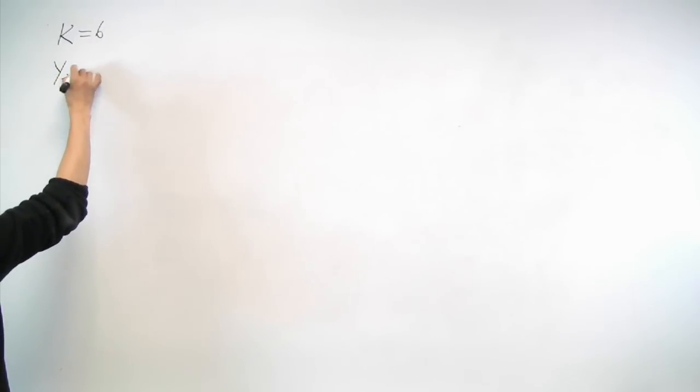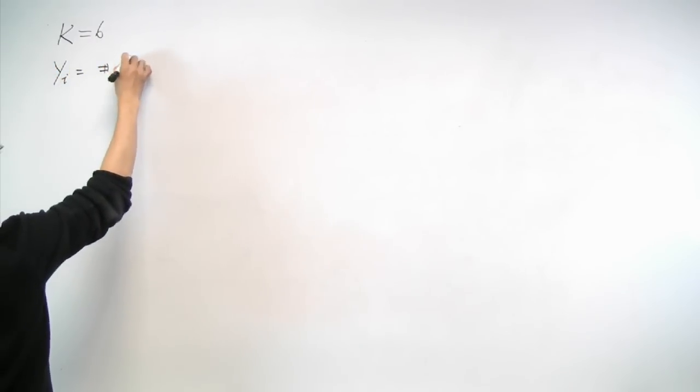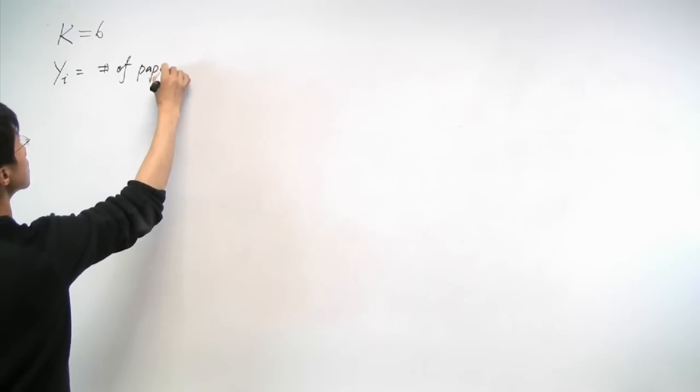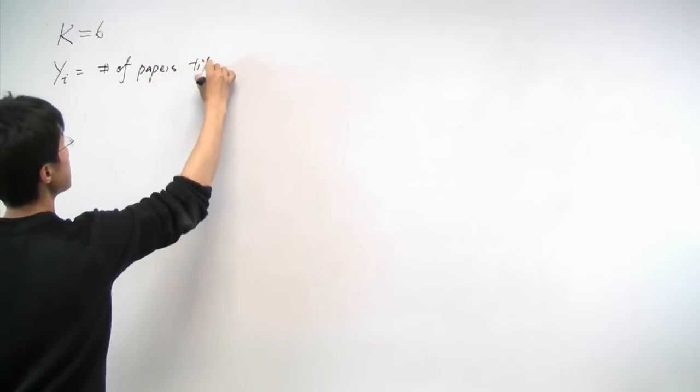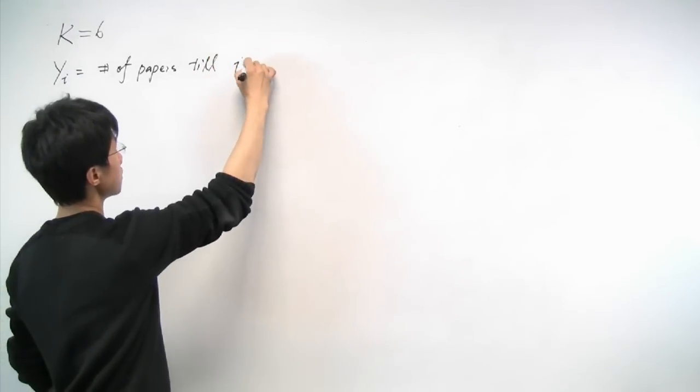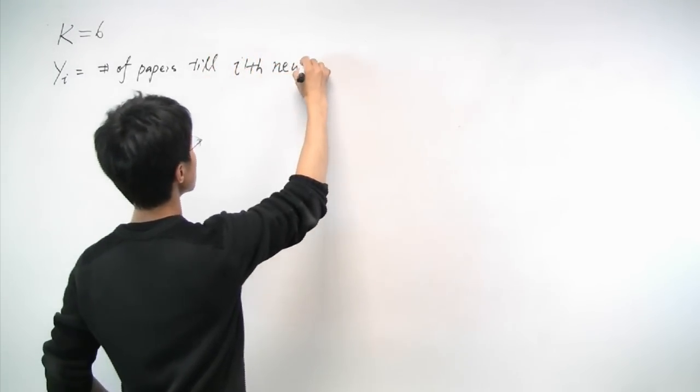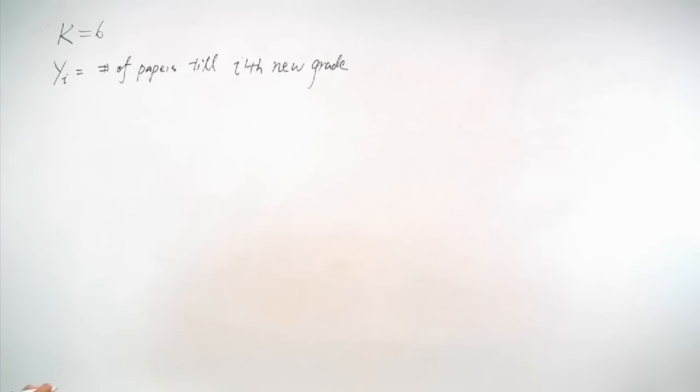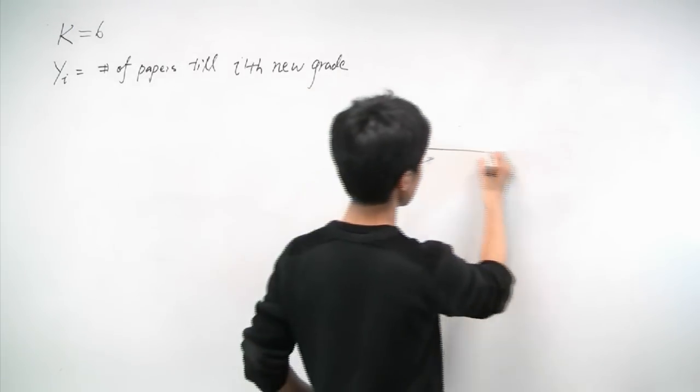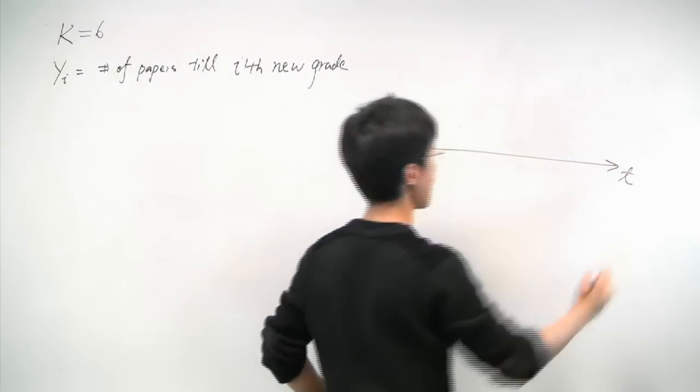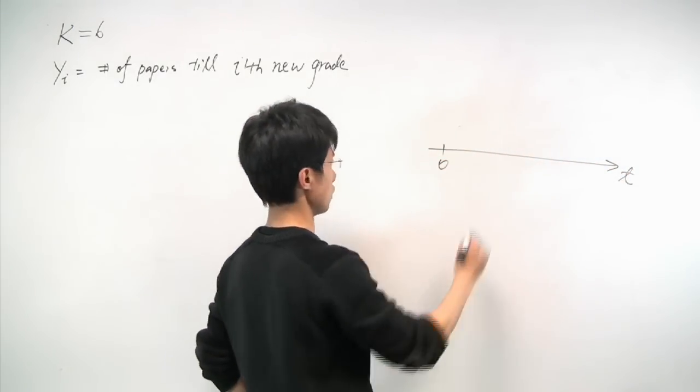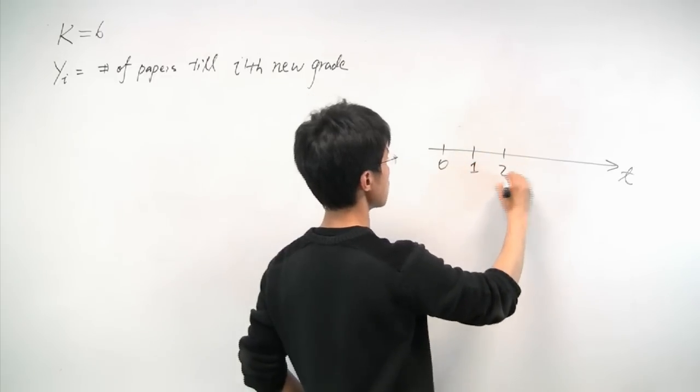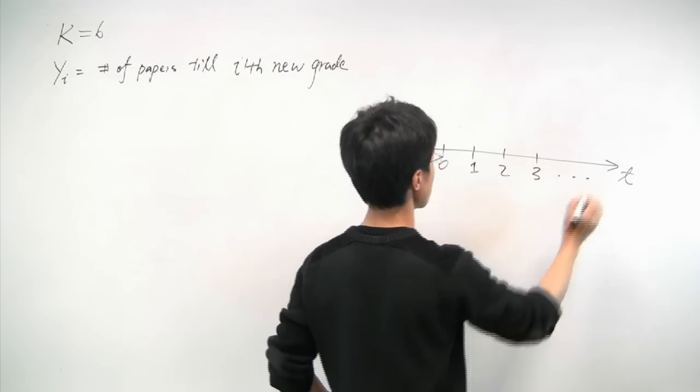We'll define yi as the number of papers till we see the i-th new grade. What does that mean? Well, let's take a look at an example. Suppose here we have a timeline from no paper yet, first paper, second paper, third paper, so on and so forth.